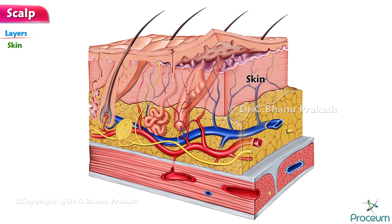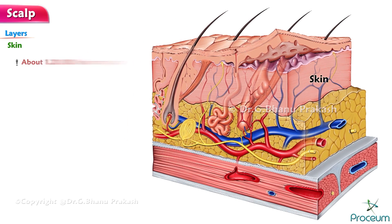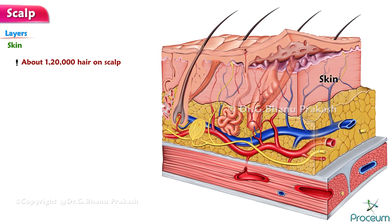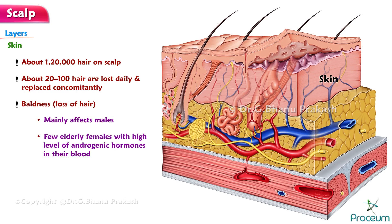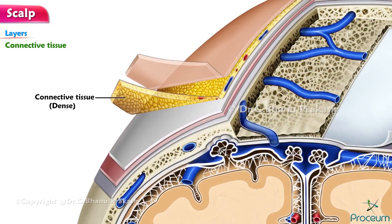It has been estimated that there are about 120,000 hairs on the scalp of an adult individual. About 20 to 100 hairs are lost daily and replaced concomitantly. Baldness or loss of hair mainly affects males and few elderly females with high levels of androgenic hormones in their blood.